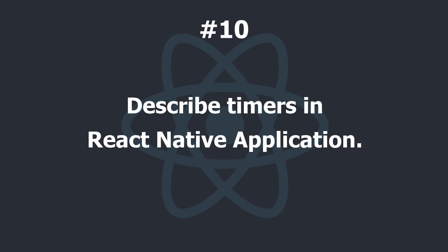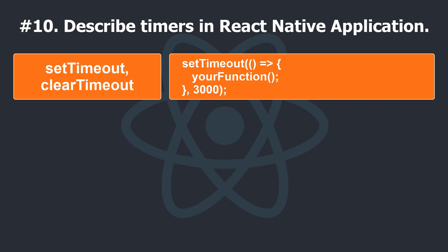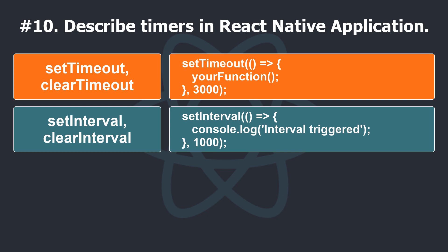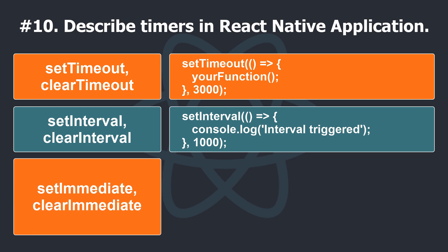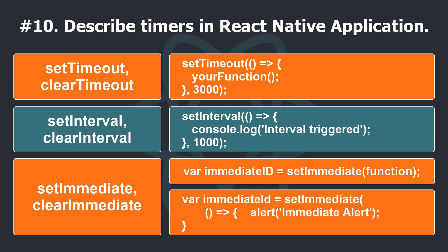Describe timers in a React Native application. SetTimeout and ClearTimeout: there may be business requirements to execute a certain piece of code after waiting for some time duration or delay — SetTimeout can be used in such cases, and ClearTimeout is used to clear the timer that was started. SetInterval and ClearInterval: SetInterval calls a function or runs code after specific intervals of time as specified through the second parameter; a function bound to an interval executes until stopped, and ClearInterval is used to stop it. SetImmediate and ClearImmediate: SetImmediate calls a function or executes code as soon as possible — this code displays the alert dialog immediately — and ClearImmediate is used for cancelling the immediate actions set by SetImmediate.